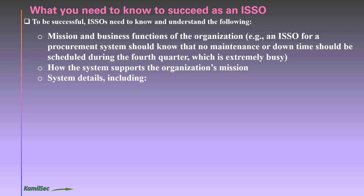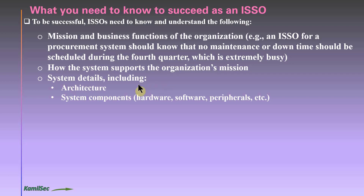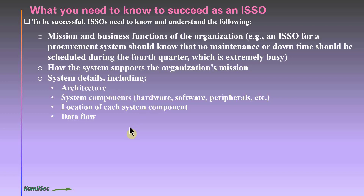You need to know the details of your system, including the architecture and system components — that is, the hardware, software, peripherals, etc. You should know the location of each system component: do you have a hybrid environment with some servers in the cloud and some on-premises? You should also understand the data flow between system components — servers, databases, network devices — and be familiar with the system architecture diagram showing exactly what goes where and what information flows from one component to another.